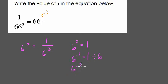6 to the negative 2 equals 1 divided by 6, divided by 6. And then finally, 6 to the negative 3 equals 1 divided by 6, divided by 6, divided by 6.